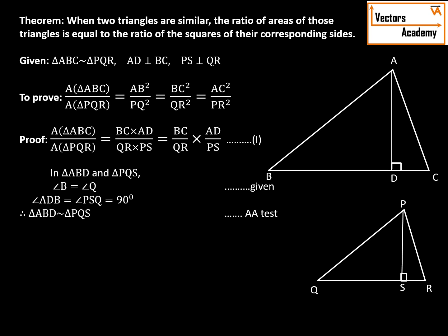Now we know once the triangles are similar, the ratio of their sides is same. So we can say AD upon PS is equal to AB upon PQ.